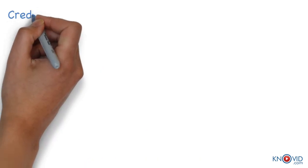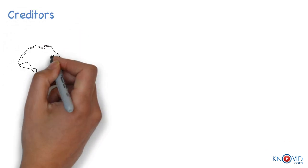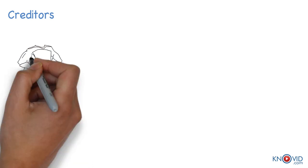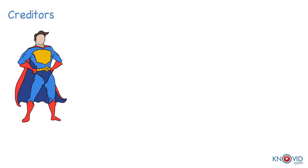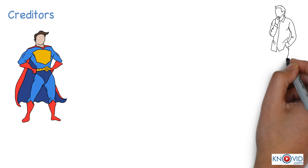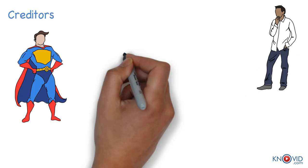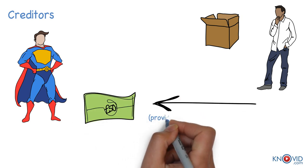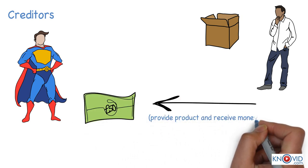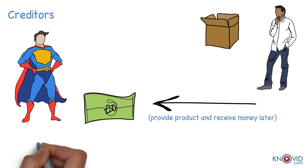Creditor is a person who gives a benefit without immediately receiving money or money's worth. For example, if I buy a box of printer cartridges from my supplier and don't immediately give money then my supplier is a creditor. The creditors are shown as a liability in the balance sheet because the business owes money to the creditors.